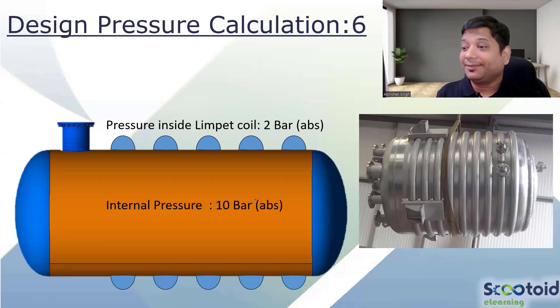What about external? What do you think is the external pressure in the limpet coil? You have two bar, atmospheric pressure is one, and you can consider that vacuum scenario may exist. Consider that vacuum is possible. In that case, what will be your external pressure?